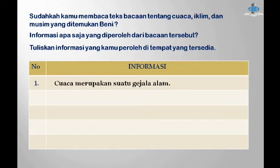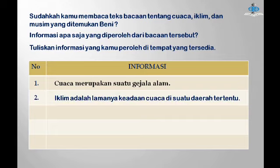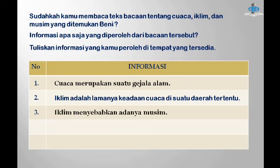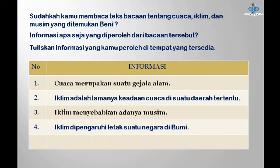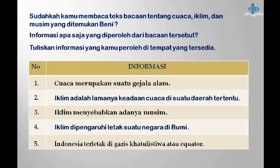Yang pertama, cuaca merupakan suatu gejala alam. Informasi yang kedua, iklim adalah lamanya keadaan cuaca di suatu daerah tertentu. Informasi yang ketiga, iklim menyebabkan adanya musim. Informasi yang keempat, iklim dipengaruhi letak suatu negara di bumi. Dan informasi yang kelima, Indonesia terletak di garis khatulistiwa atau ekuator.